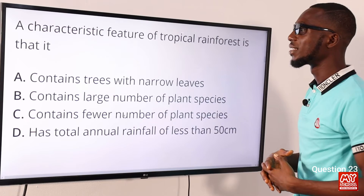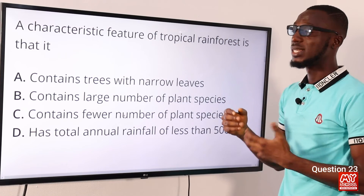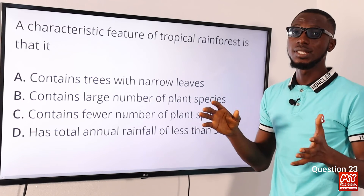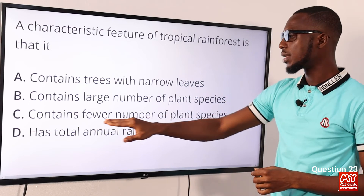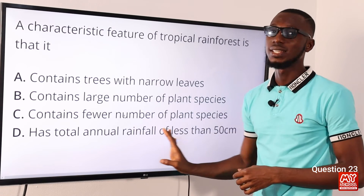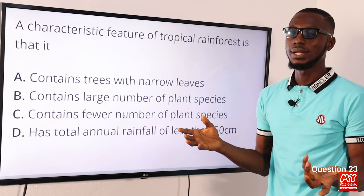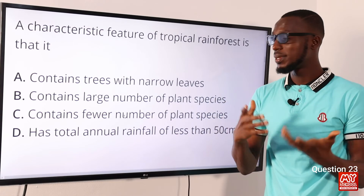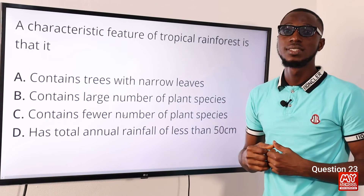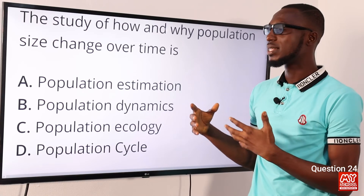Question twenty-three: a characteristic feature of tropical rainforest is what? Option A — trees with narrow leaves — is incorrect, as trees in tropical rainforest tend to be broad-leaved. Option B — contains a large number of plant species — is correct, as there is great variety. Option C — fewer plant species — is incorrect. Option D — annual rainfall of less than 50 cm — is incorrect; annual rainfall is about 2000 mm and temperature is around 27 degrees. The correct option is option B.